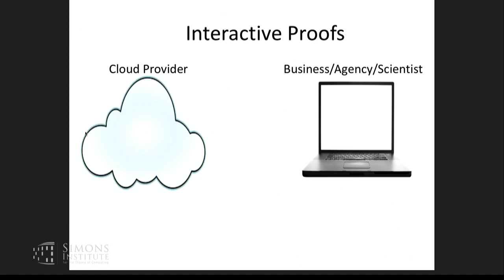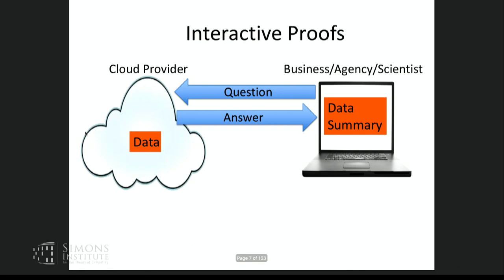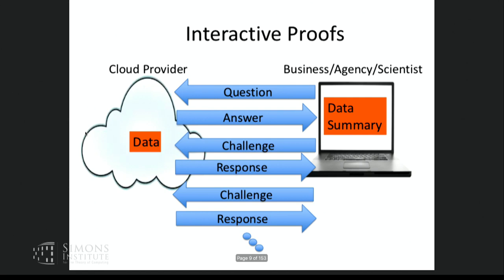When you think about interactive proofs, it's helpful to have the following scenario in mind. Imagine there is a computationally weak user — maybe you with your laptop — who is using a commercial cloud computing service to store and process data. You send data up to the cloud, which stores it. Later you ask the cloud a question about your data, like 'please run this analysis,' and the cloud responds with an answer. But you don't trust the cloud.